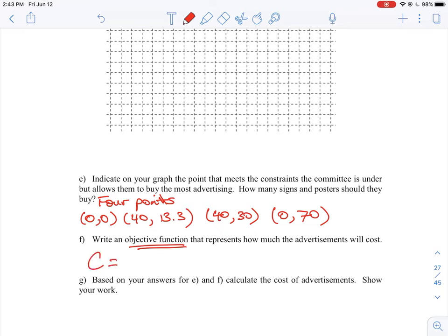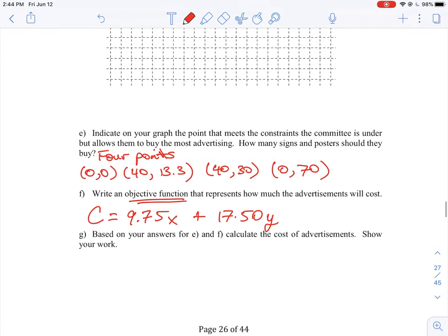Now our objective function, remember, is our cost equation. So we know from the question that it costs $9.75 times the number of signs, which was represented by the letter X, and then we know that the posters were $17.50 times the number of posters, which is represented by the number Y. So then what we have to do is figure out here what is going to - which constraints the committee is under to buy them the most advertising. So we are looking for the most amount of advertising that we can get that essentially is going to be the cheapest price. Here's the way we need to look at this. Our cost equation, we need to plug in the values for each one of those points. So our first point is 0, 0. So what does that actually buy us? Well, it buys us nothing, because we can't buy any posters and we can't buy anything for values signs. So it would cost us nothing, but it buys us nothing. So that's really not an answer that we want.